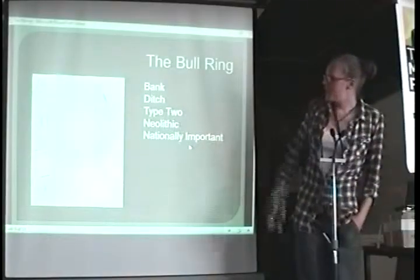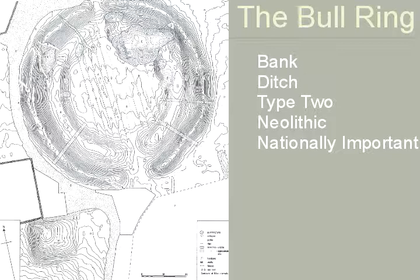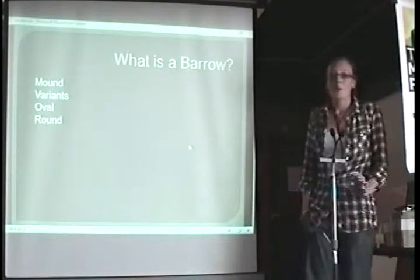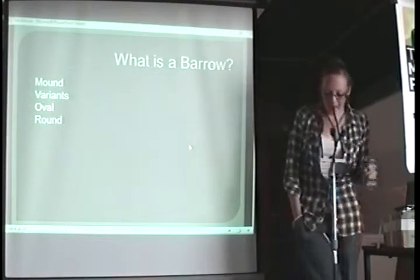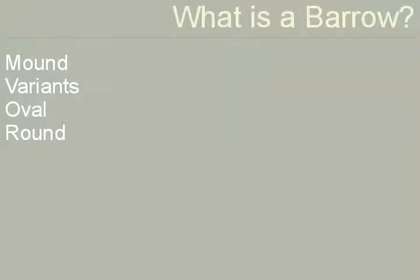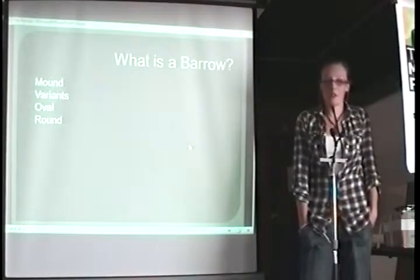So with the bullring, this is a lovely topographical image of the bullring there. It has the bank, it has the ditch, it is a type 2 because it has two entrances. It's a Neolithic Henge Monument and it is a nationally important one. So what is a barrow? Now a barrow is a form of burial mound. There's many varieties of them, there could be up to 10 different varieties of barrows. The ones here are suggested as being an oval barrow and a round barrow.